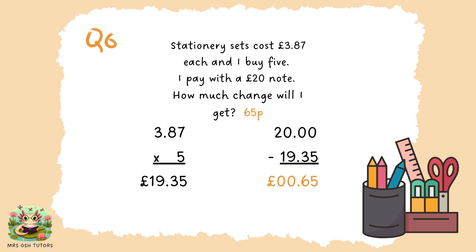For question six, this was a two-step problem. The first step is to multiply £3.87 by 5. When multiplying decimals, you can count how many digits are after the decimal point to know how many digits in the answer will be after the decimal. So 3.87 × 5: think of it as 387 × 5, then place the decimal so that the last two digits are after the point, giving £19.35. I paid with a £20 note, so using column subtraction I would need to exchange all the way along, reaching an answer of 65p change.